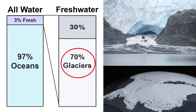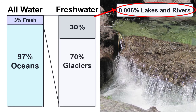About 70% of the world's fresh water is trapped in glaciers — ice that's frozen on land. Most of us probably think of lakes and rivers when we think of fresh water, but actually these sources make up only 0.006% of the planet's fresh water supply and are not evenly distributed everywhere.